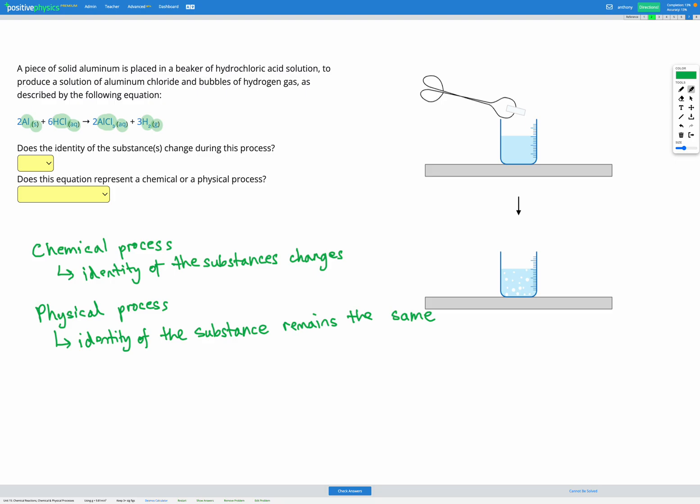The hydrogen and the chlorine start off as an ionic compound together in solution. At the end they've broken apart. The hydrogen has formed its own molecule of hydrogen gas and the chlorine has reacted with the aluminium to form an ionic compound in solution. So the actual arrangement of the elements together has changed. So the identity of the substances has changed in this process. Therefore it's defined as a chemical process because the chemical process is one where the identity of the substances change.